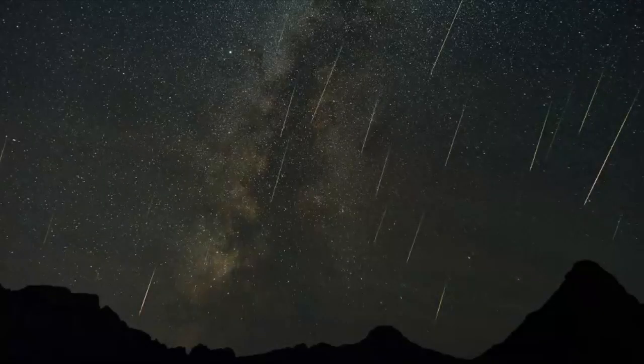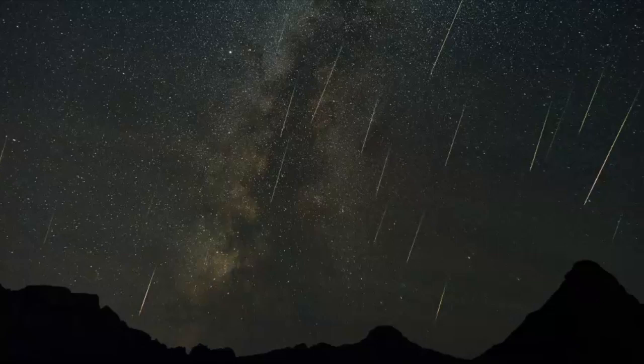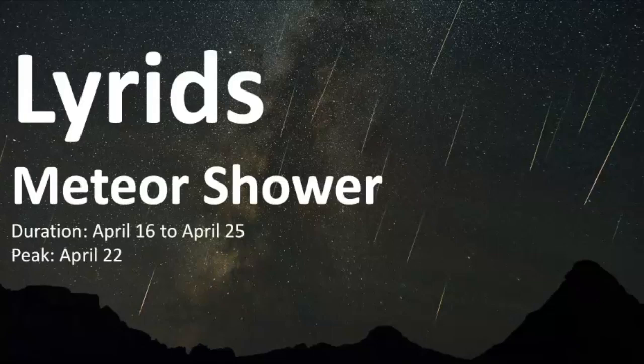The Lyrids meteor shower occurs over a two-week period in April and usually peaks on April 22nd. The records of this meteor shower go back as far as 687 BC, making it the oldest known record of any meteor shower to date. Welcome to Learn the Sky.